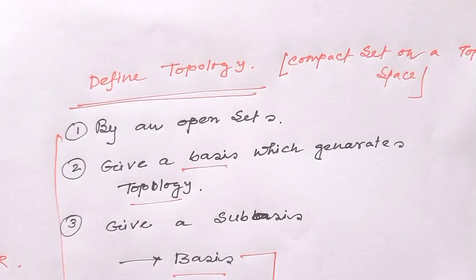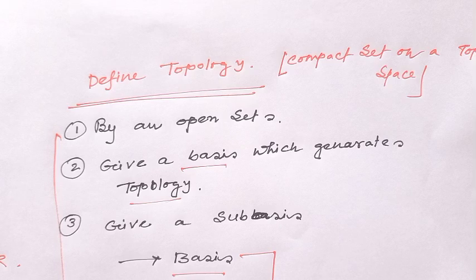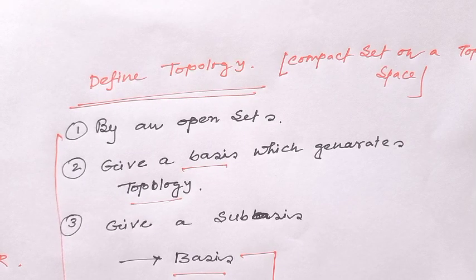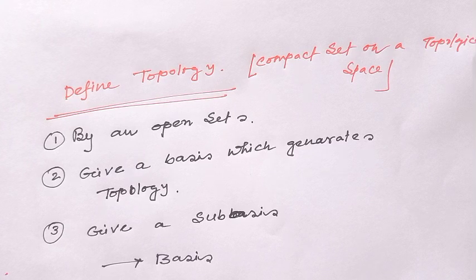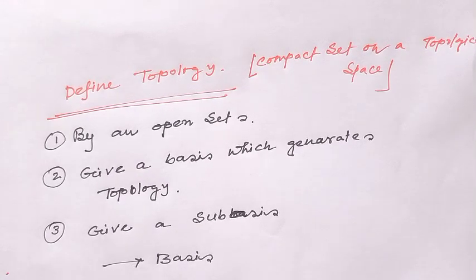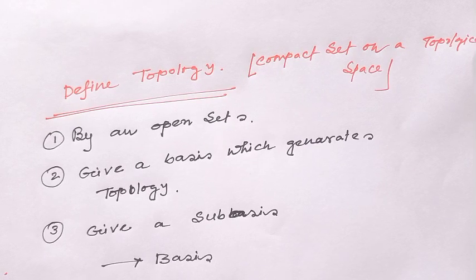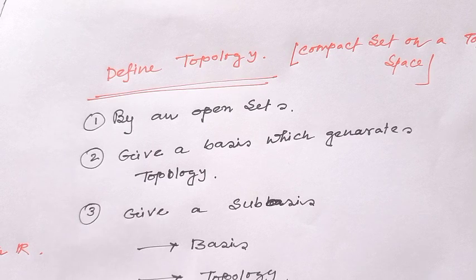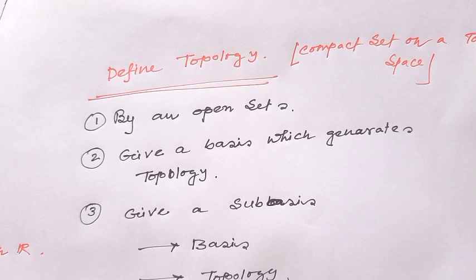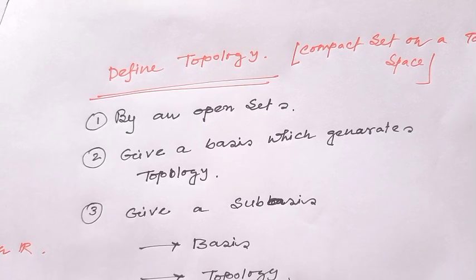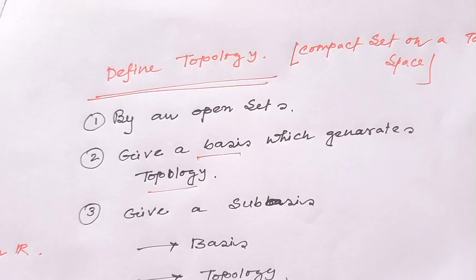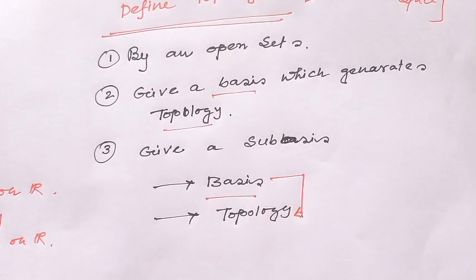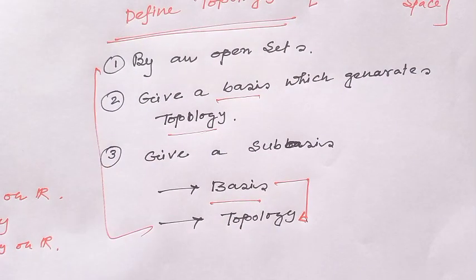Today's goal of this lecture: in my previous video I have seen what is the compact set in a metric space. Today I will see what is the compact set in a topological space. At first I will see some various examples of topological space, then I will define the compact set on this topological space. A topological space is made by open sets, or generated by a given basis, or given a sub-basis which generates a basis and this basis generates the topology. This is the actual idea of how the topological space is generated.